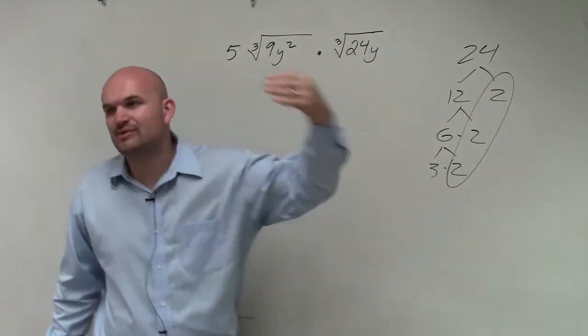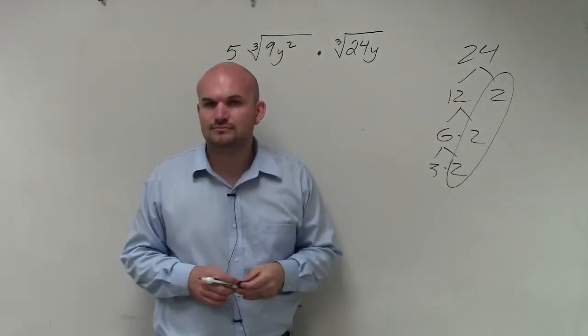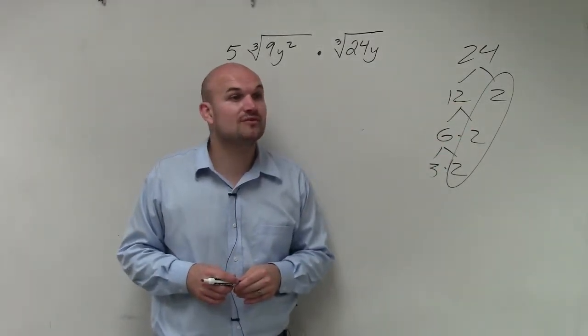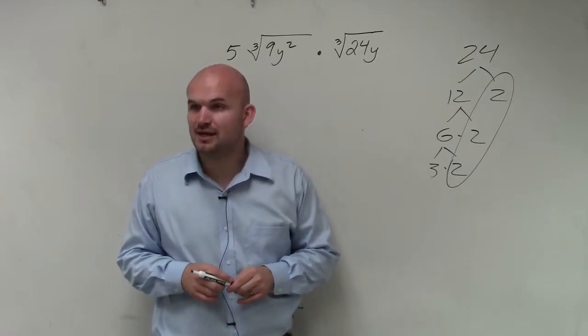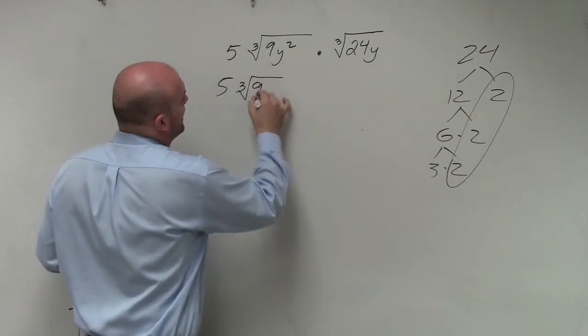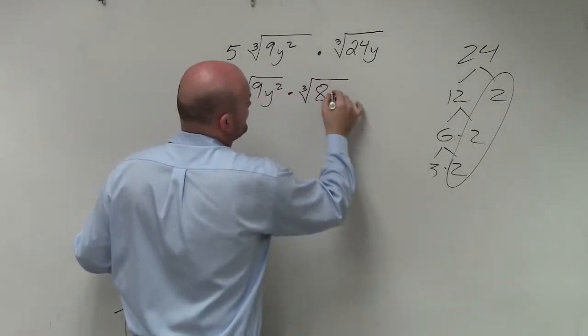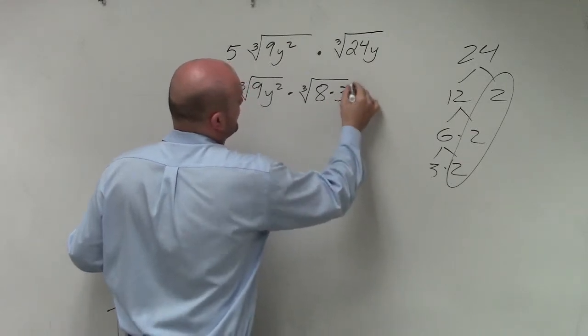Now, rather than rewriting this as a prime factorization, 2 times 2 times 2 is really what? 2 times 2 is 4, 4 times 2 is 8. So I have 5 times the cube root of 9y² times the cube root of 8 times 3 times y.